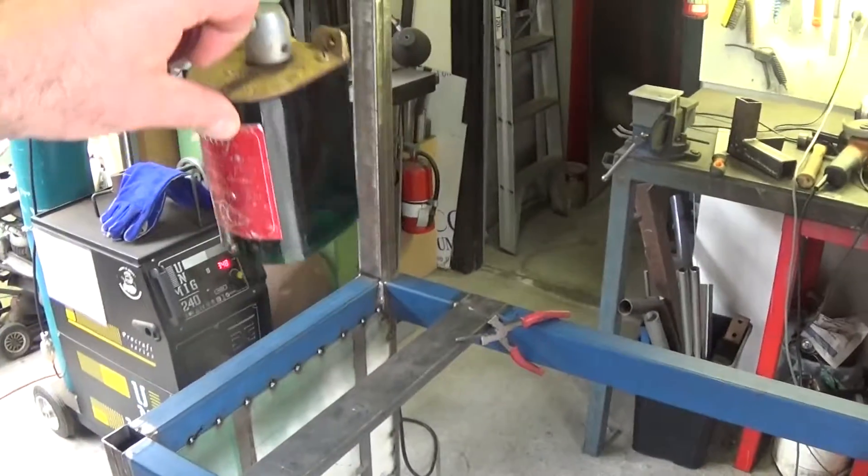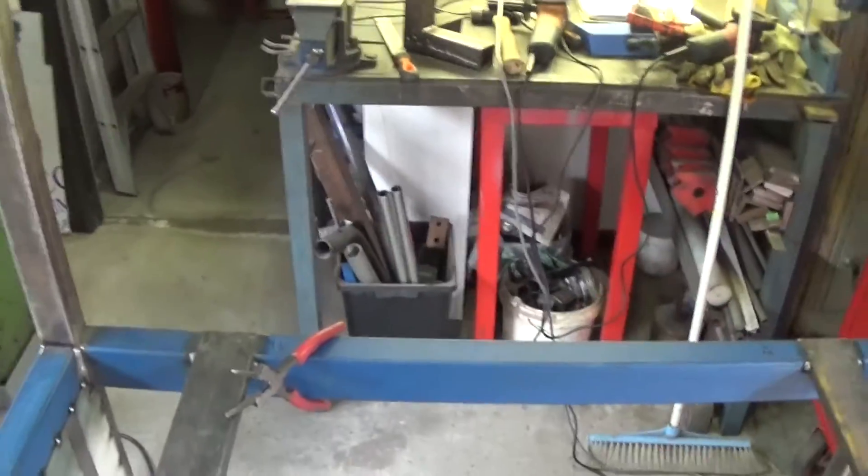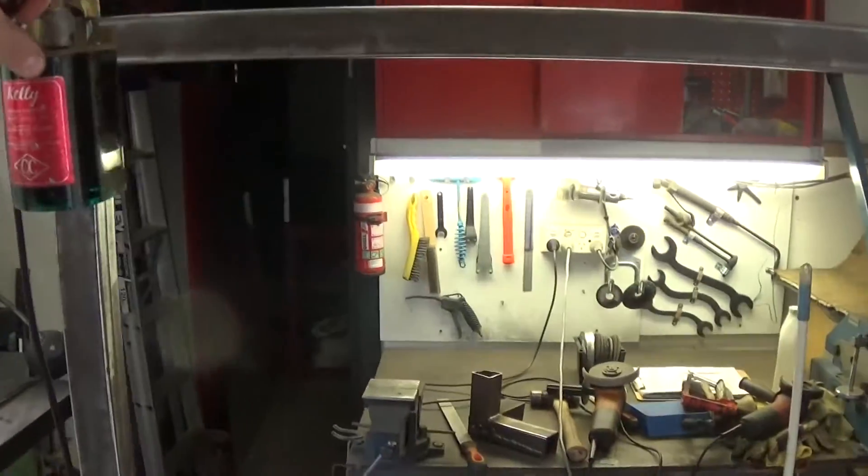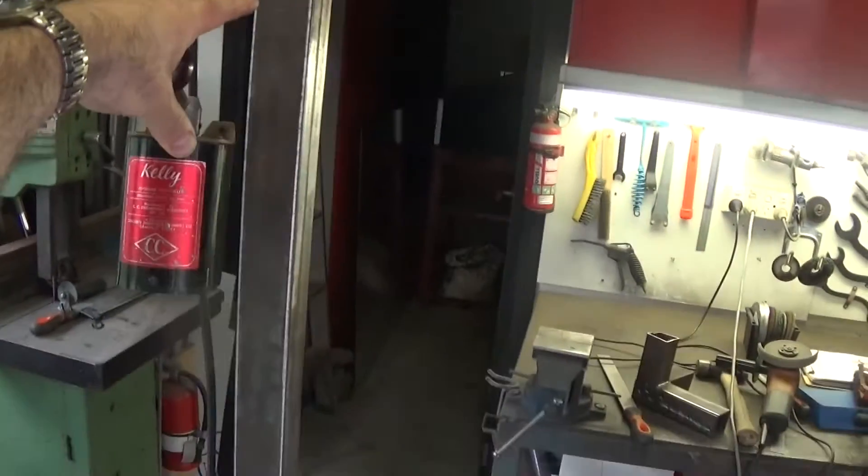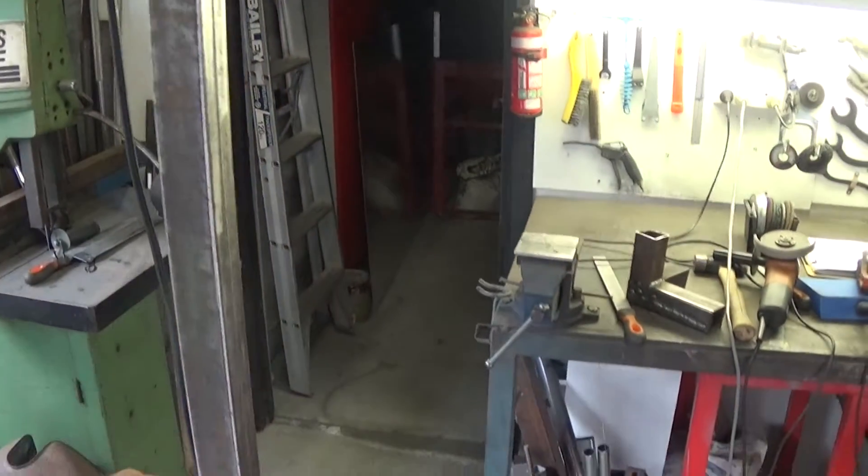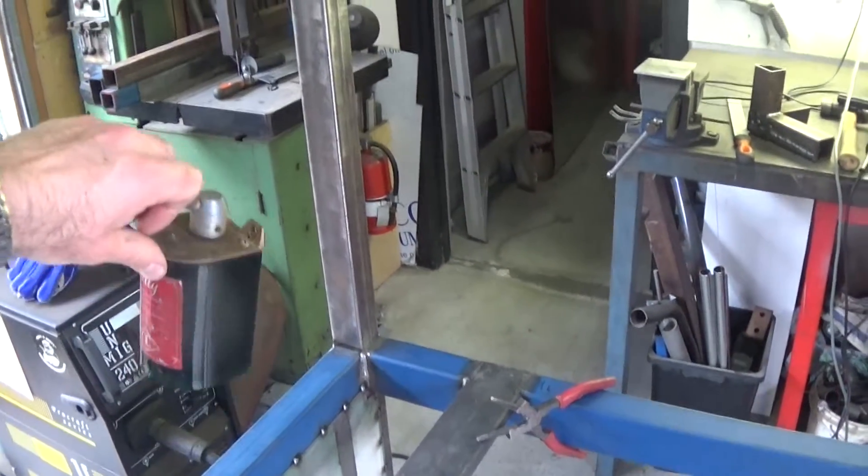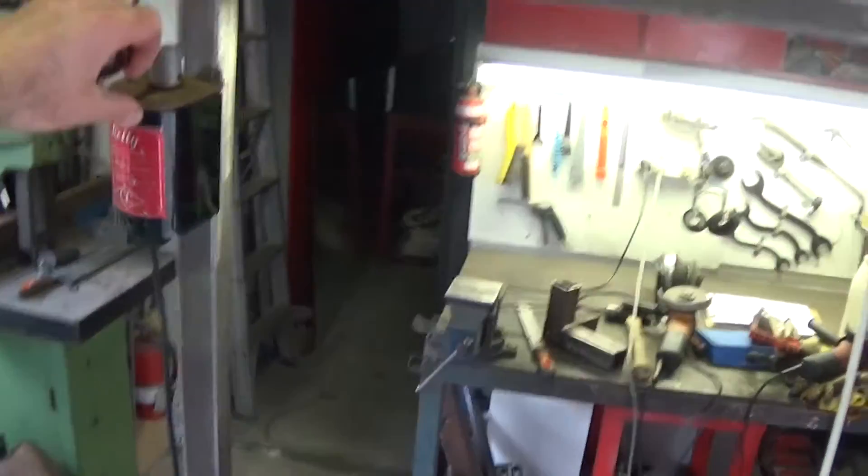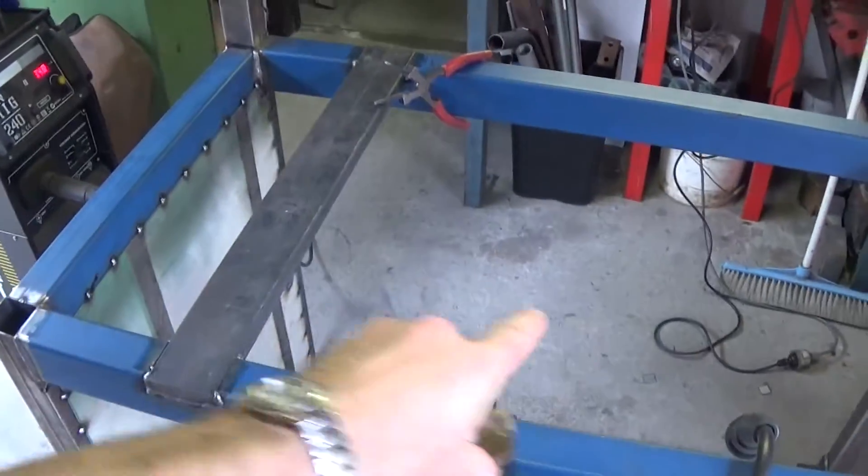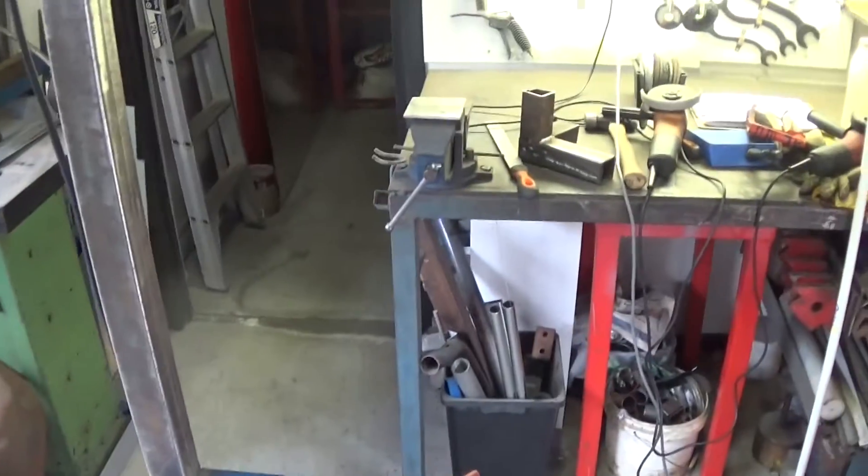So the other option I've got for this drum switch is I could always mount it up on the backboard somewhere and that would let me run the cables internally in this rear leg which would be pretty tidy. It still doesn't absolve me of the problem of having to reach across the lathe to switch it on and off.